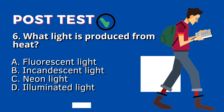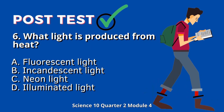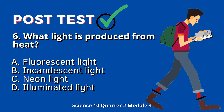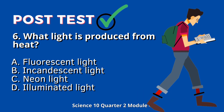Question 6: What light is produced from heat? A. Fluorescent Light. B. Incandescent Light. C. Neon Light. D. Illuminated Light.